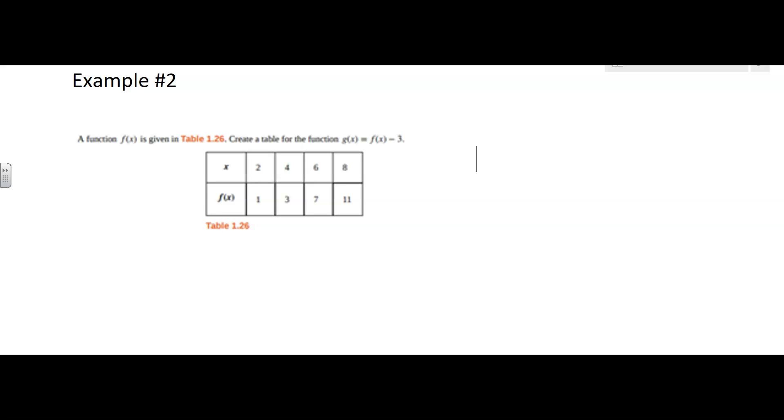The table is for f of x. See how the table has an input and an output. Now it's important that you keep remembering what's the input, what's the output. Input of x, output, f of x.